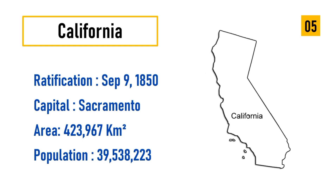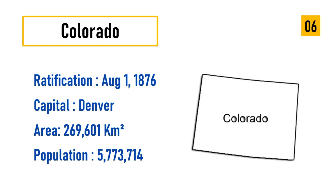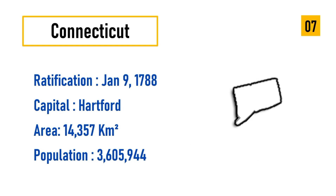Number five: California, ratification September 9, 1850, capital Sacramento, area 423,967 square kilometers, population 39,538,223. Number six: Colorado, ratification August 1, 1876, capital Denver, area 269,601 square kilometers, population 5,773,714.